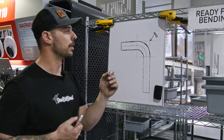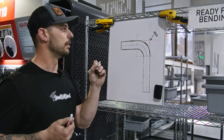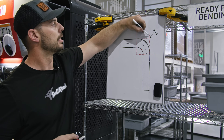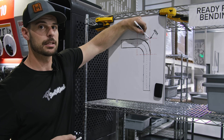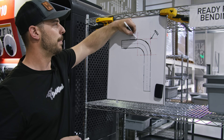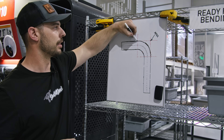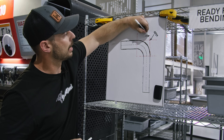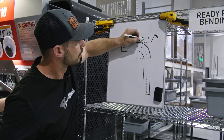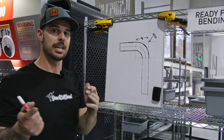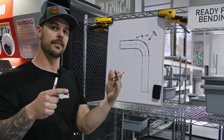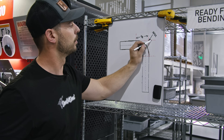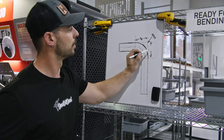The next part we want to talk about is the setback point — we're going to call that SB in this drawing. The setback is the distance from that apex, that theoretical point out in space, back to where the bend line is going to be — so the end of our bend that goes into the flange. This bend has two setbacks, one on each side, and they are actually the same exact distance.